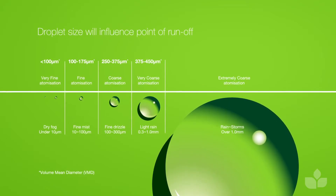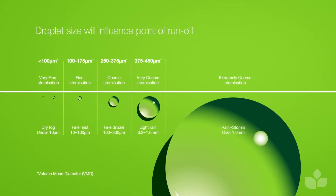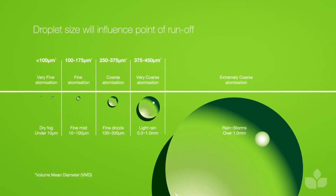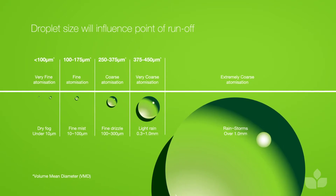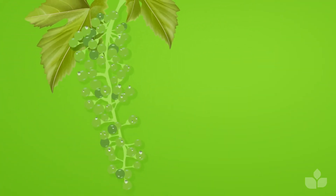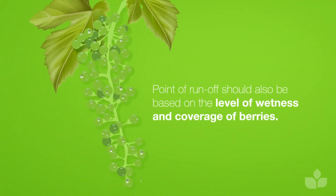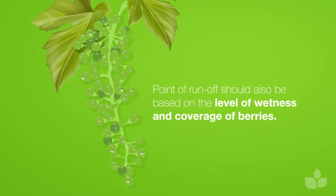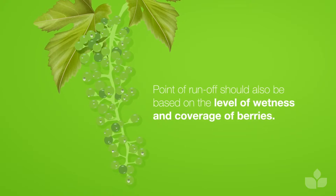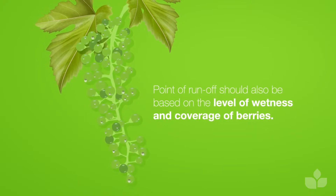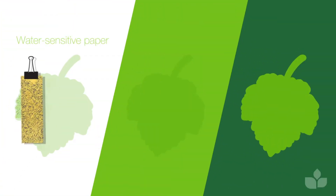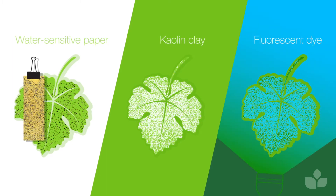It is generally more difficult to thoroughly wet a vine canopy using fine droplets. When targeting bunches, the point of runoff should be based on the level of wetness and coverage of berries.